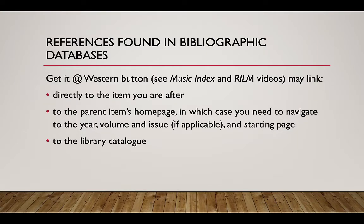For references found in bibliographic databases, there will often be a Get It At Western button. See our Music Index and RILM videos for details. The Get It At Western button may link you directly to the item that you're after, or it may link you to the parent item's homepage — for example, the journal's homepage or the book's homepage. In this case, you'll need to navigate to the year, volume, and issue if applicable, and the starting page for that item.